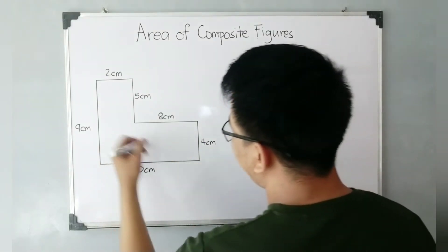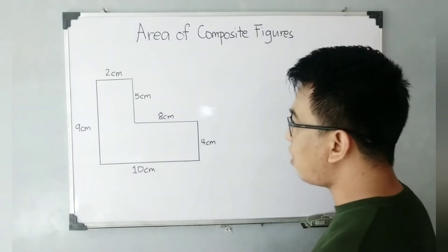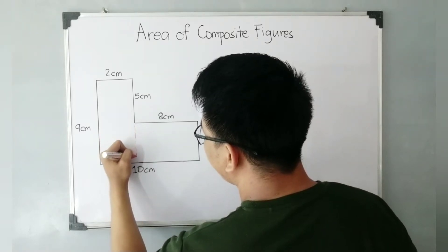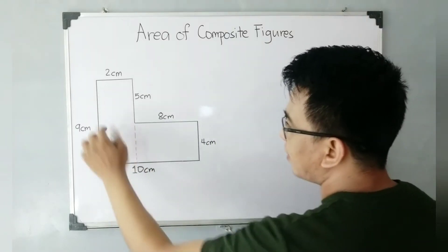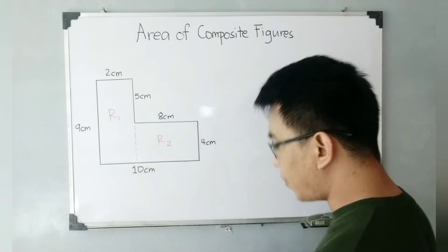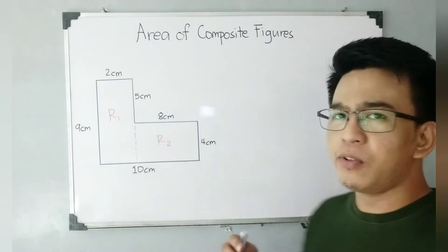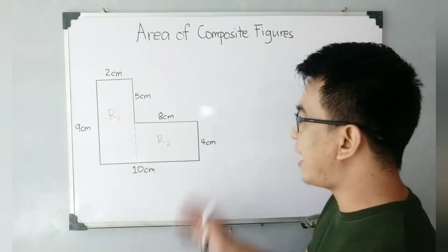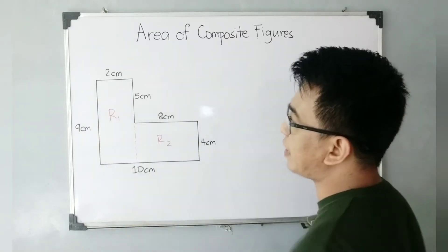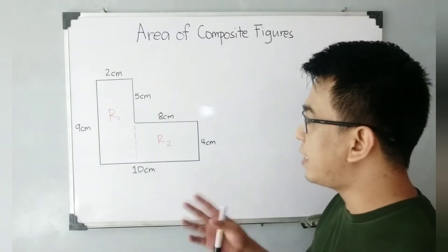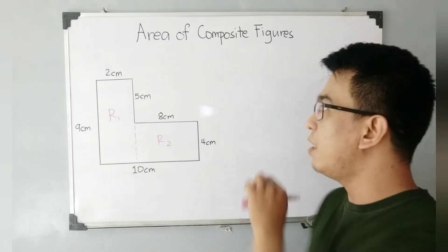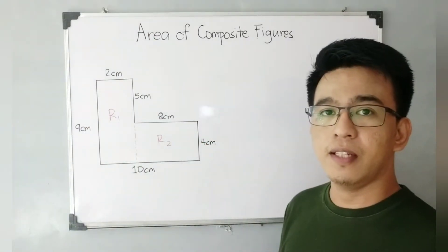So the first thing I need to do is to draw an imaginary line here so that we can name this rectangle as Rectangle Number One and this one as Rectangle Number Two. The reason I need to dissect this into smaller figures is because when I calculate the area of Rectangle Number One plus the area of Rectangle Number Two, it will give me the area of the whole composite figure.